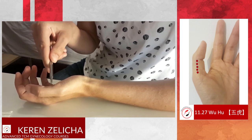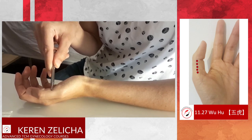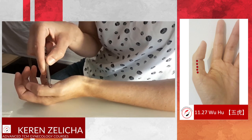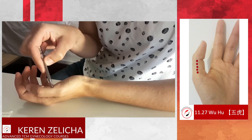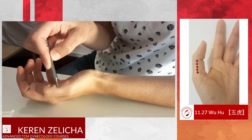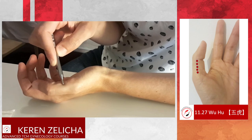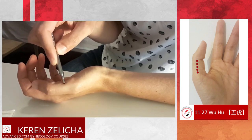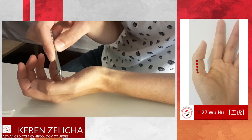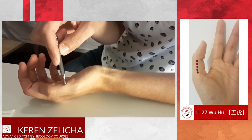Wuhu number one can treat the hands and the shoulders — it will treat arthritis of the fingers, for example. If we want to influence the lower part of the body, such as in gout disease, ankle disease, or heel pain, we will choose the most proximal point among these five points.